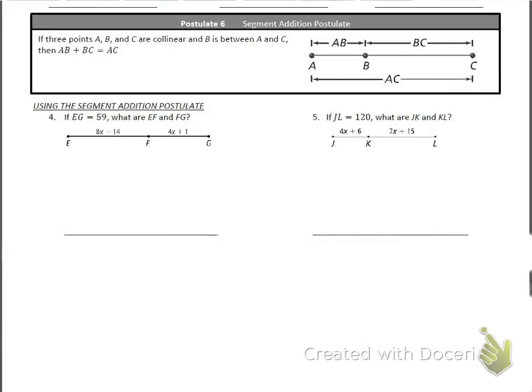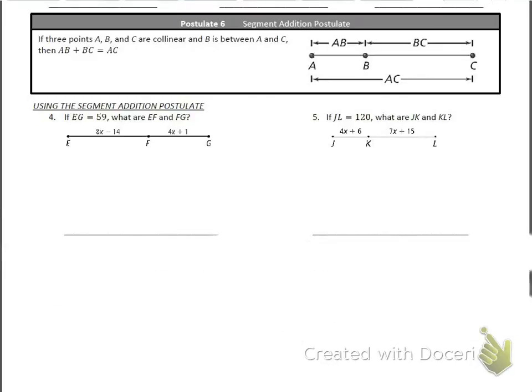Okay, so let's talk about the next part. So postulate 6, and this is one that you definitely need to know, and you definitely need to know the name of. So, I would put a star next to it. It is the segment addition postulate. Here's what the segment addition postulate says. If three points, A, B, and C are collinear, and B is between A and C, and then I want you to underline this, then AB plus BC equals AC. That should make sense. If I have AB, and I add it to BC, I should get the full length of AC. So, that's the segment addition postulate. You do need to know the name and what it says.